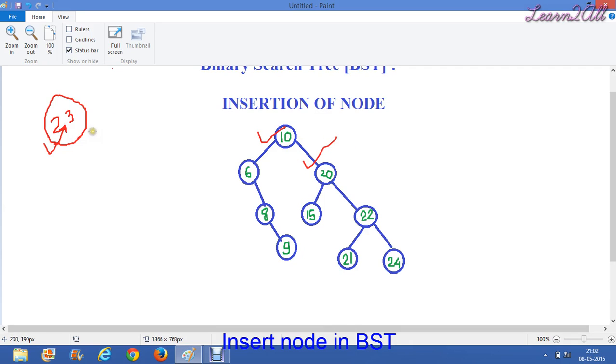Now we will compare 23 with 20 which is also greater than, so again we will move toward the right side. So here root node is 22. Now we will compare 23 with 22, so that again 23 is greater than 22.